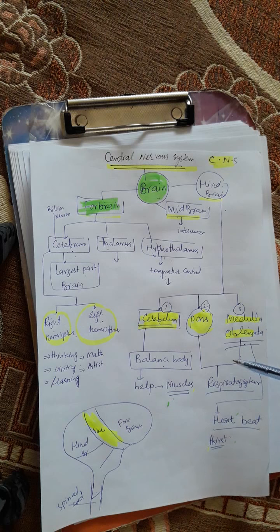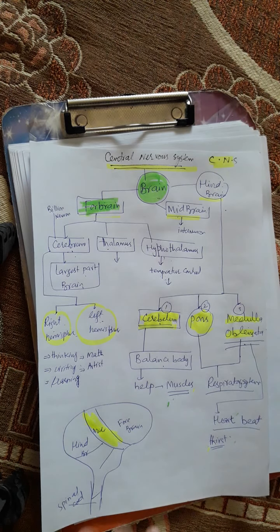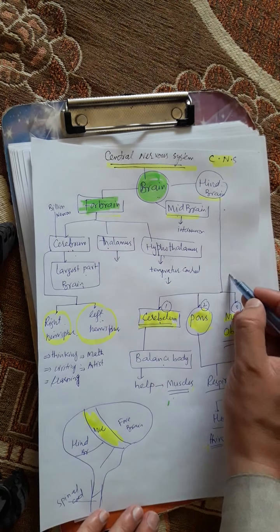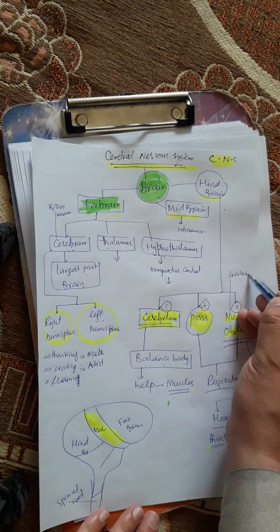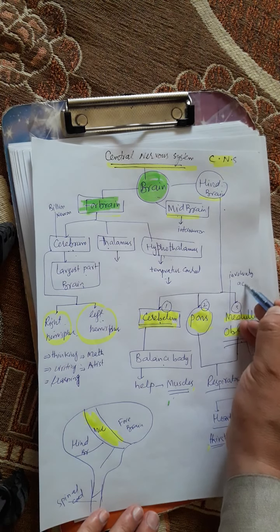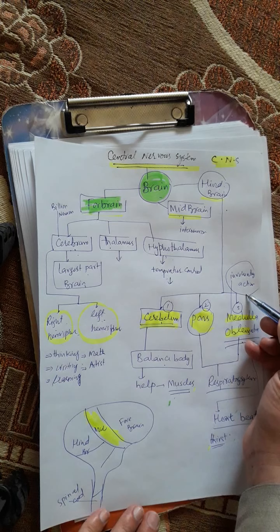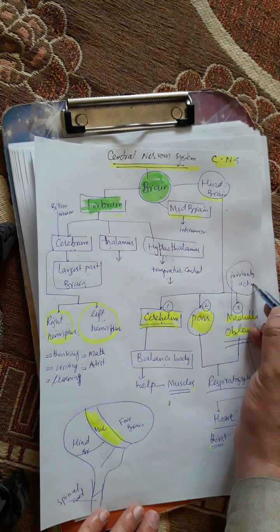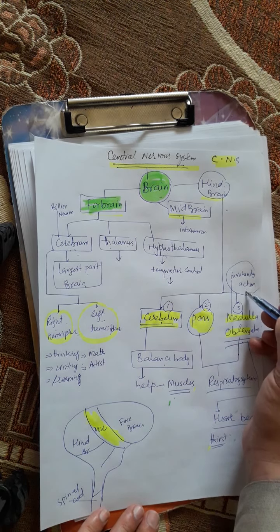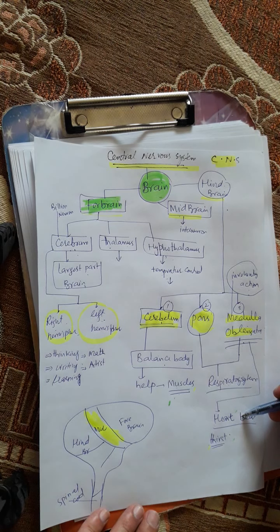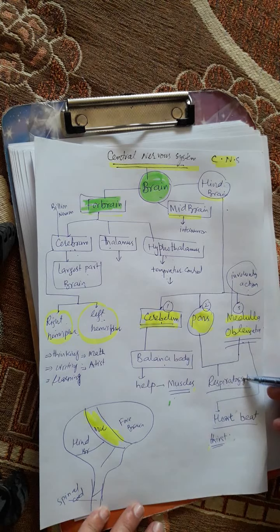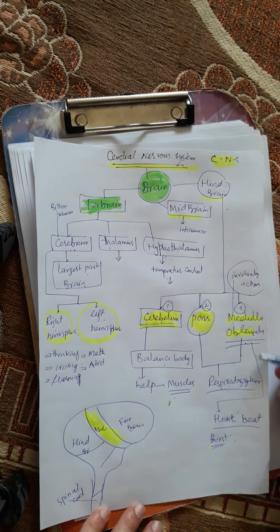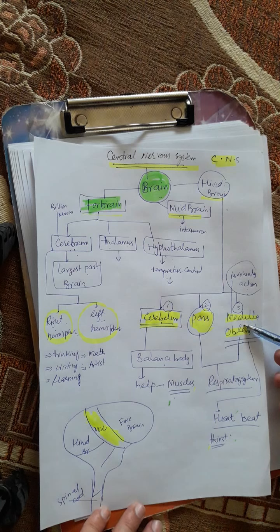Pons and medulla perform different kinds of work. For example, controlling the respiratory system and controlling the heartbeat. The medulla always controls involuntary actions. Involuntary actions are those which are not in our control — for example, heartbeat and respiration, breathing in and out. All of these are involuntary actions performed by the medulla oblongata.